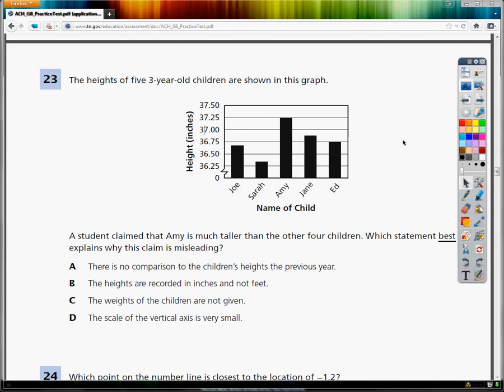As you can see, the graph shows the name of the children and the height. A student claims that Amy is much taller than the other four children. Which statement best explains why this claim is misleading?